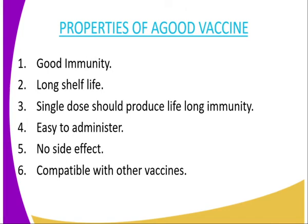Then we have the properties of good vaccines. It should produce good immunity — as good as natural immunity. The second property is long shelf life: the lifespan before it expires should be longer. A single dose should produce lifelong immunity.